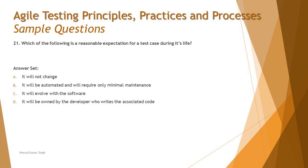The life cycle of a test case does not end with execution. Options are: Option A — it will not change — that cannot be correct given the justification provided. Option B — it will be automated and will require only minimal maintenance — that's not always true; automation maintenance can sometimes be extensive. Option C — it will evolve with the software — that correlates directly to our discussion. Option D — it will be owned by the developer who writes the associated code — not necessarily true in general.